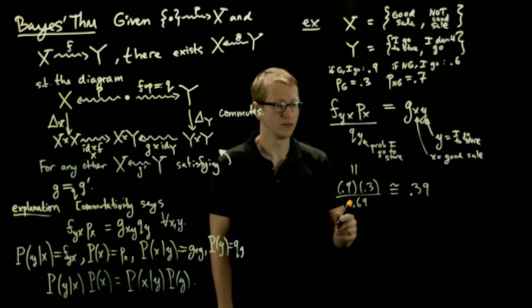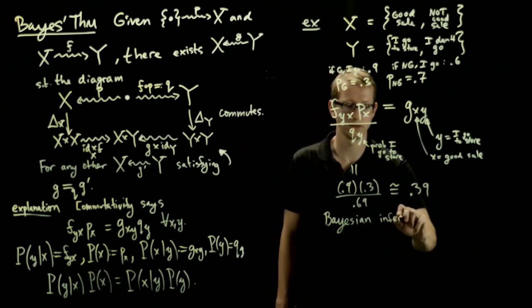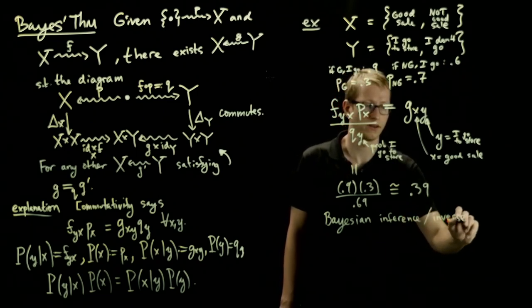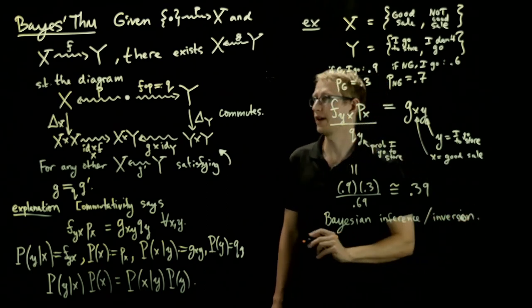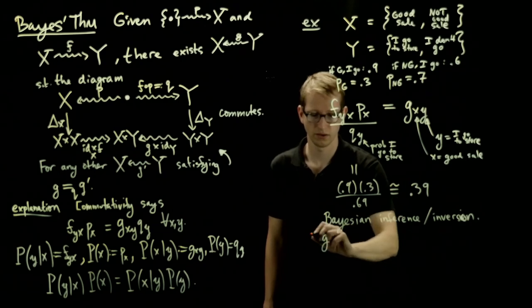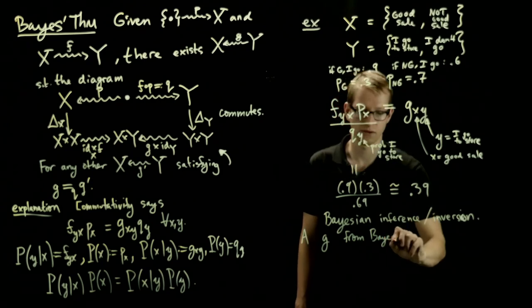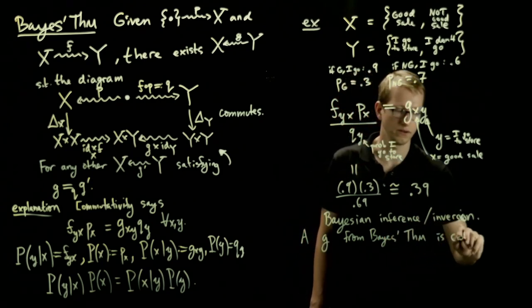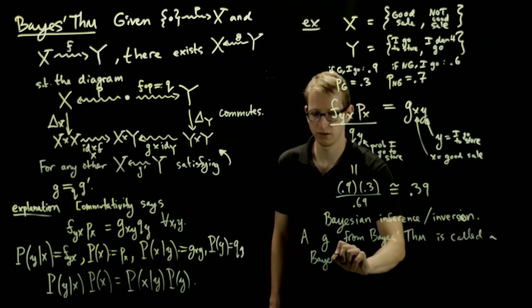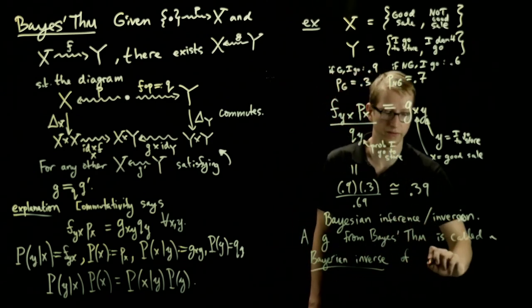And this is known as Bayesian inference or inversion. And in fact, the map g constructed here, a g from Bayes' theorem, is called a Bayesian inverse of f.